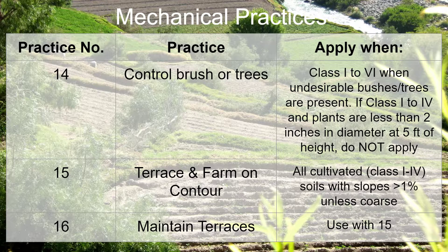Practice number 14: Control brush or trees. Apply this practice when your land is class five to six and contains undesirable bushes or trees. If your land is class one to four and the plants present are less than two inches in diameter at five feet of height, do not apply.